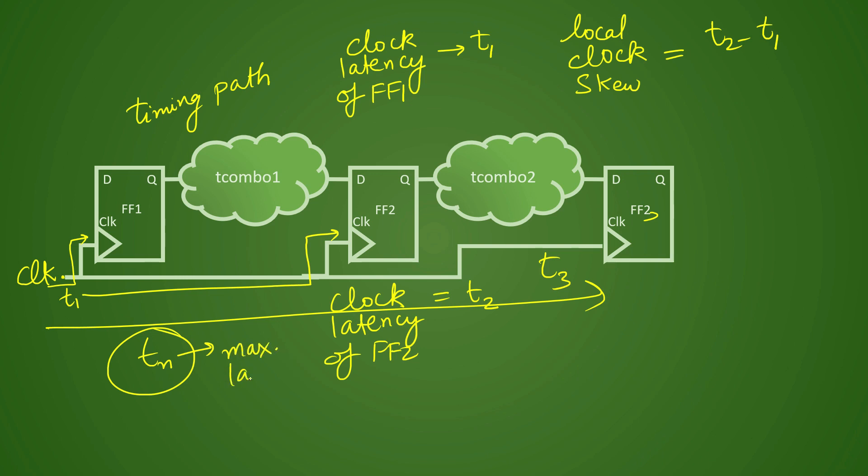So if this is the maximum latency in your entire design and this is your minimum latency in your entire design T1, then in that case you can have one global skew also. So in your timing reports, if you see, you can find out that there is a global skew also mentioned.